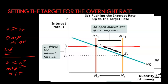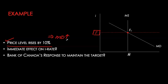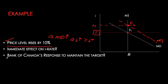Let's do an example. We start with the money market at equilibrium — quantity demanded equals quantity supplied — and this equilibrium interest rate is also the Bank of Canada's target rate. Now assume the price level rises by 10%. This immediately impacts money demand: people increase their demand for money balances by 10%, so the money demand curve shifts to the right. There's a new equilibrium E2 with a correspondingly higher interest rate.